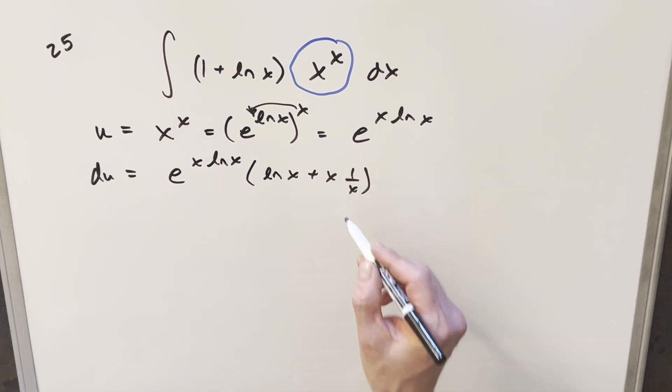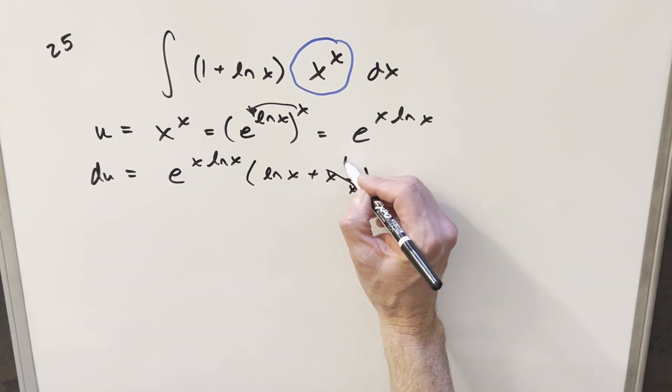derivative of x is just 1. So we're going to have for the first term ln x plus x derivative of ln x is going to give me 1 over x. But then the x is cancelled, so this piece is just 1.